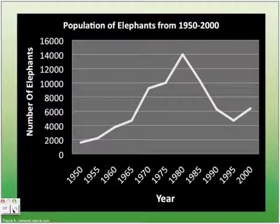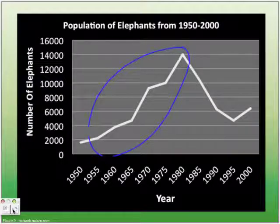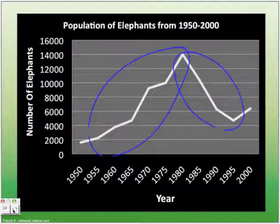Looking at this part of the picture, it shows that after the ban on killing wild elephants, the population increased substantially. But after a while, the population decreased substantially because the increase had exceeded the carrying capacity for this type of organism.